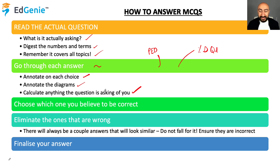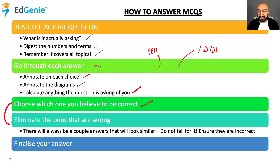Step four: choose which one you believe is correct — just pick one. Then eliminate the ones that are wrong. As you're going through each answer, cross them off. These two steps can be interchangeable, but when you're not sure, pick the one you believe is correct and at the same time eliminate the ones you think are definitely wrong.